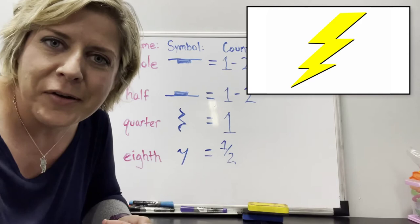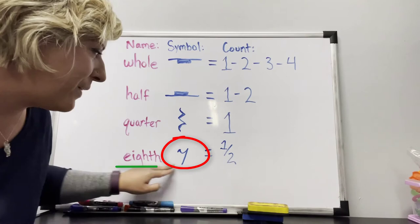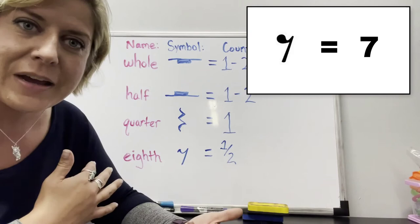And then this one right here, the way I remember it, it's pretty funny. So the eighth rest, ironically, looks like a seven. So that's how I remember it's an eighth rest. Eighth rest looks like a seven.